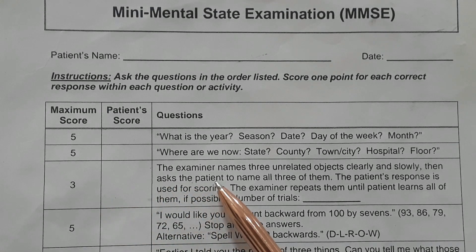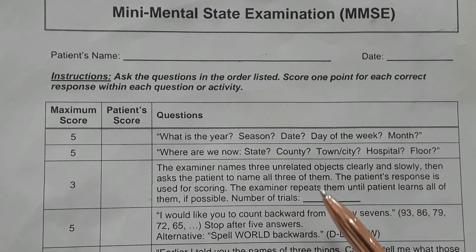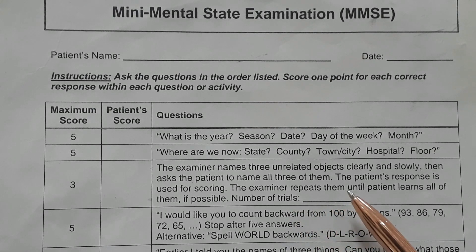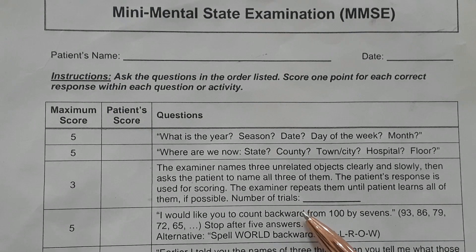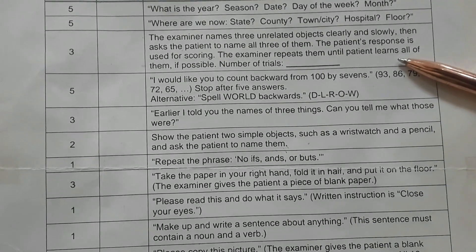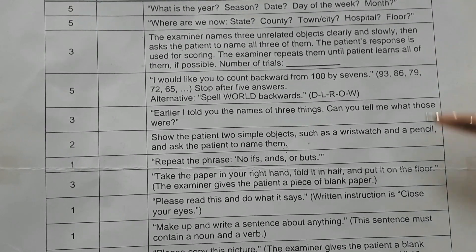For a score of 3, registration: the examiner names three unrelated objects clearly and slowly, then asks the patient to name all three. The patient's response is used for scoring. The examiner repeats them until the patient learns all of them. For example, the three objects could be fan, table, and book.